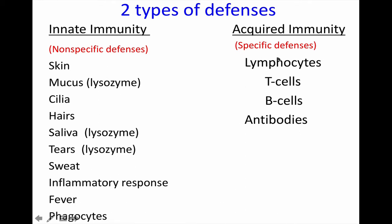With your acquired immunity, you have specific defenses. These specific defenses are usually cells or proteins — you have T-cells, B-cells, and antibodies. You actually make specific T-cells, specific B-cells, and specific antibodies that will attack only a certain type of bacteria or virus. Those cells made specially for that bacteria or virus will only attack that one; if another bacteria or virus comes along, they usually won't attack it.